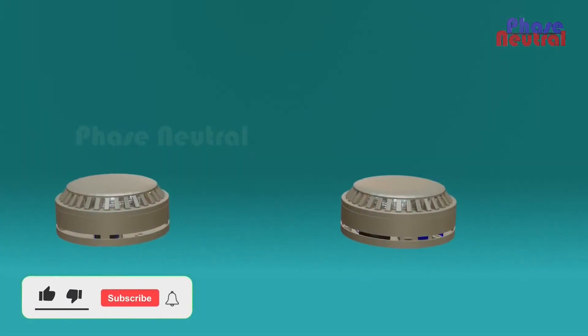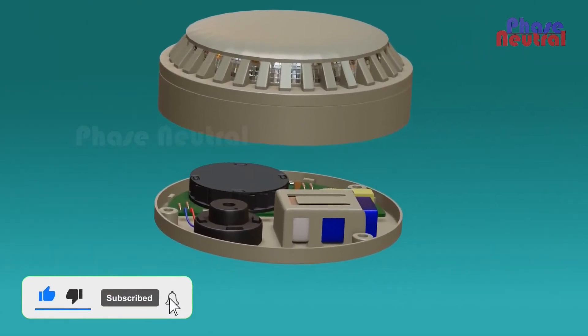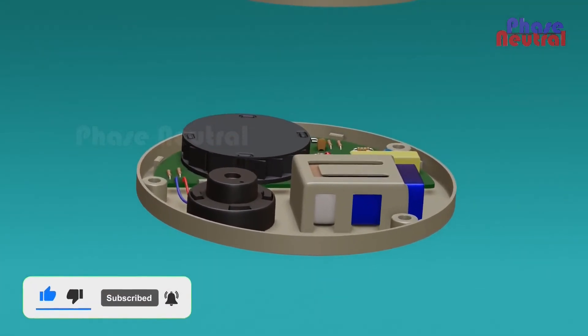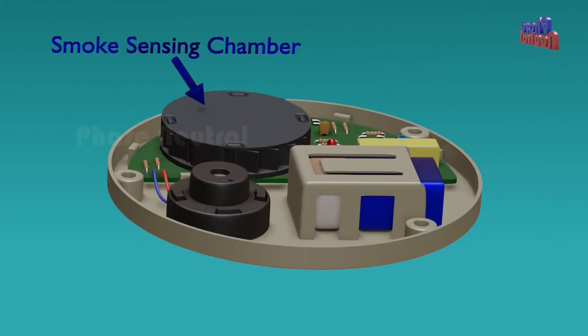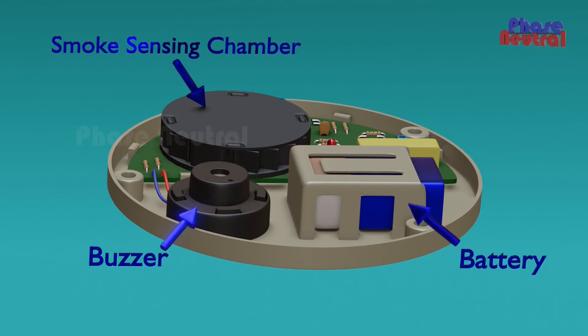Photoelectric smoke detector technology is totally different from the ionization smoke detector. Internal components of photoelectric smoke detectors are: smoke sensing chamber, buzzer, battery, and circuit board.